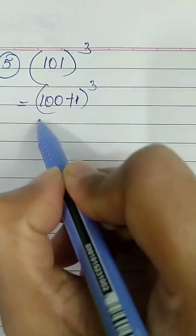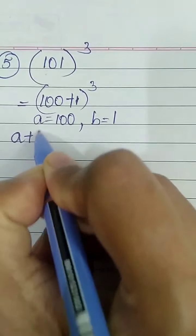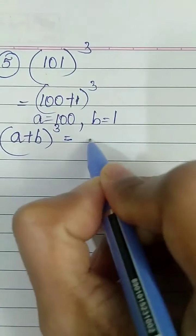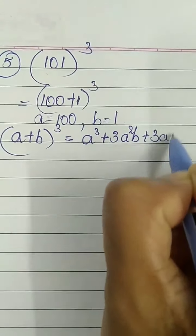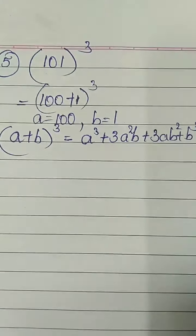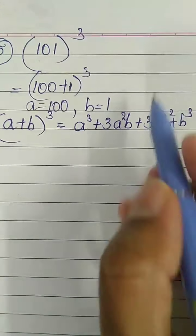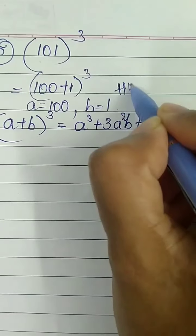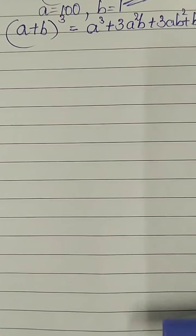Sum 5: 101³. Write it as (100 + 1)³ where a = 100 and b = 1. Use the formula (a + b)³ = a³ + 3a²b + 3ab² + b³ and substitute a = 100 to get the answer. This is easy, so I am giving it as homework. Complete it and then go to the further video.